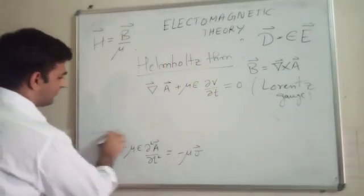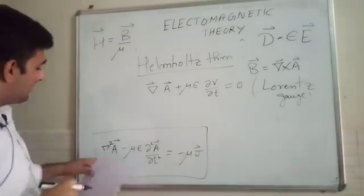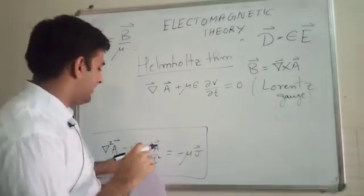Applying the Lorentz gauge condition eliminates the gauge-dependent term, and we obtain the inhomogeneous wave equation for the vector potential A: del-squared A minus mu epsilon d²A/dt² equals minus mu J. This is an inhomogeneous wave equation where the inhomogeneity comes from the current density J.